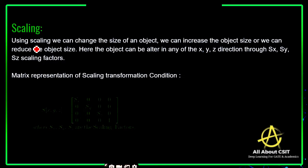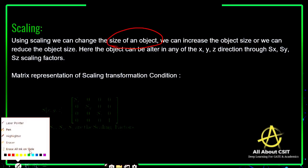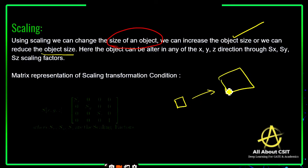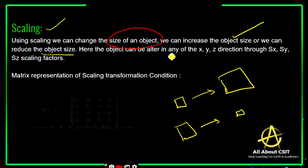Now coming to the scaling concept. Using scaling, we can change the size of an object — we can increase or reduce the object size. The objects can be altered in any of the x, y, or z directions through scaling factors sx, sy, and sz. In the matrix representation, sx, sy, and sz are the scaling factors.